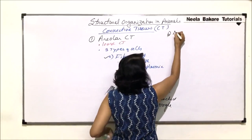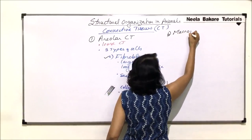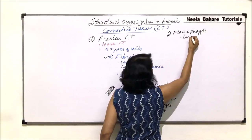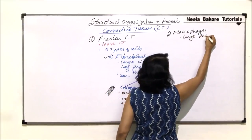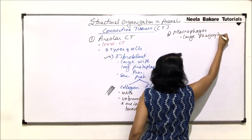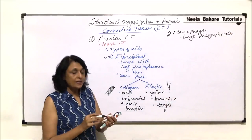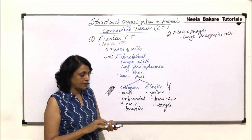The second type of cells are known as macrophages. Macrophages are large phagocytic cells. That means these are the cells which are going to engulf the foreign particles.